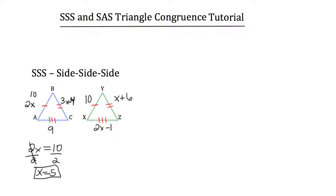Side BC would be 3 times 5, which is 15, minus 4, which would make that side 11. To match it up to YZ, x plus 6, we know that x is 5, so 5 plus 6 is 11, and that works out.